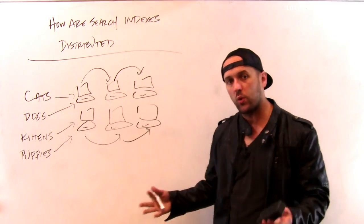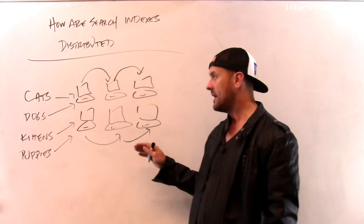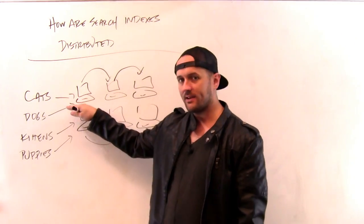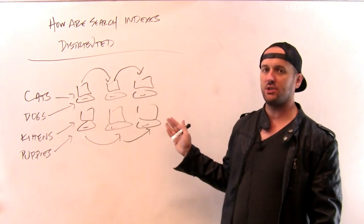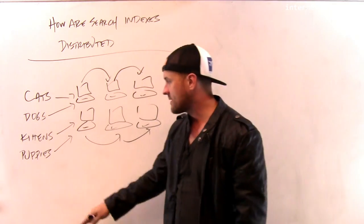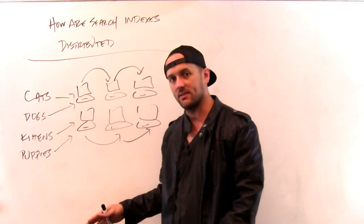The reason is if a bunch of queries come in all at the same time that are looking, that need to access the index for cats, rather than sending them all to one machine, I now have three different machines and I can distribute them over. Same thing if a bunch of queries come in for kittens and puppies and things like that.